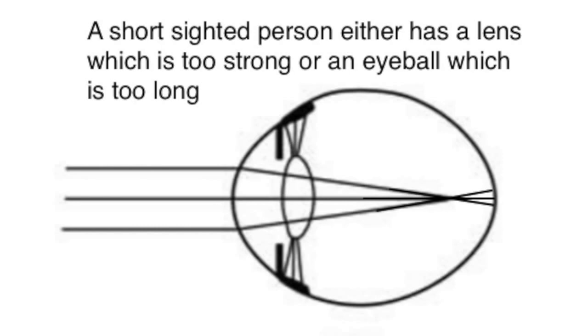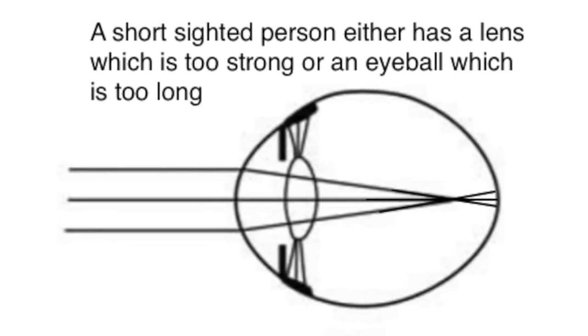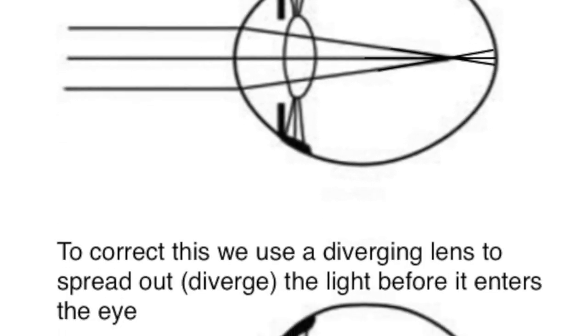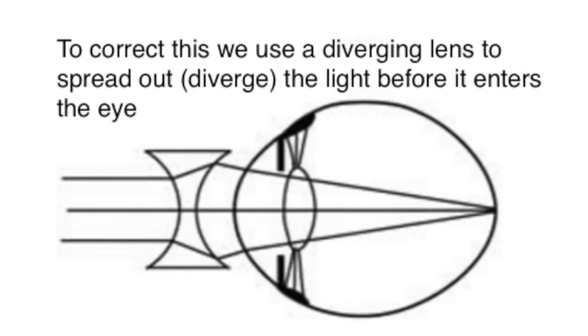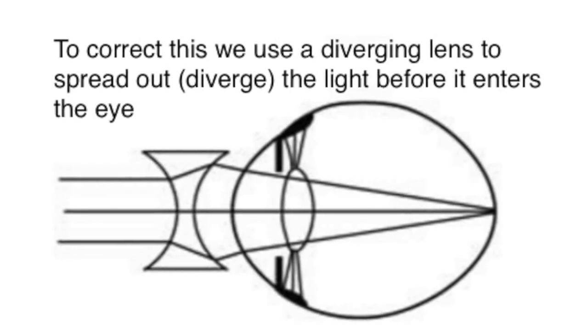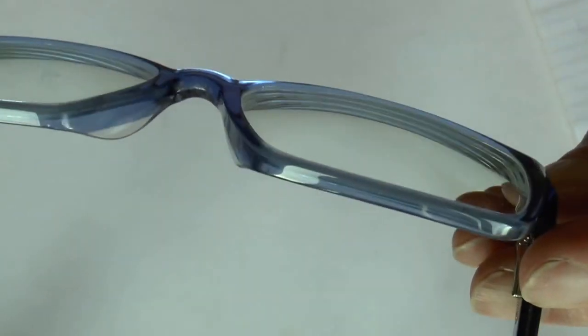In this case either the lens is too strong or the eyeball is too long and the light is focused before it reaches the retina, resulting in a rather blurry view of the world. To help correct that we use a diverging lens. This spreads the light out before it enters the eye and so balances out the problem so that the light is again focused on the retina. That is exactly what these spectacles of mine do.